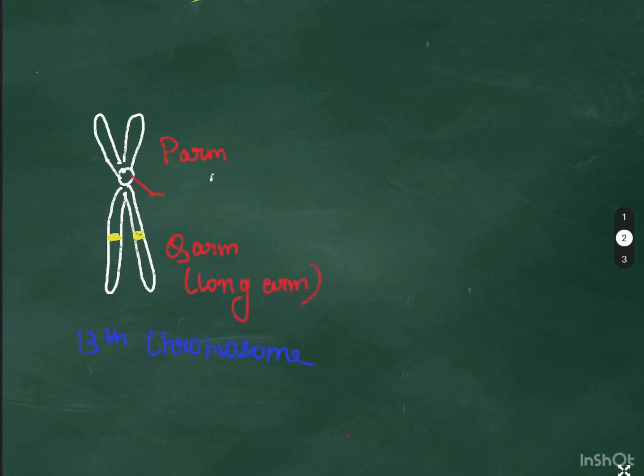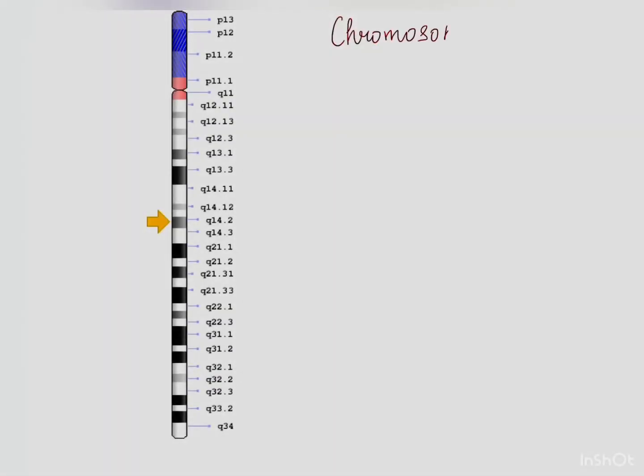The chromosomes are stained by specific staining techniques, according to which we can know the exact location. As you can see, these are the different bands obtained by the staining techniques. The exact location of the RB1 gene is on the Q arm on the second part of the 14th band.